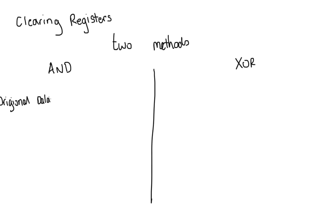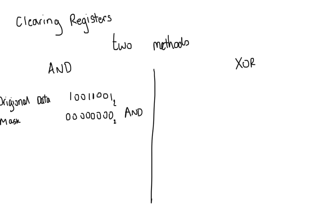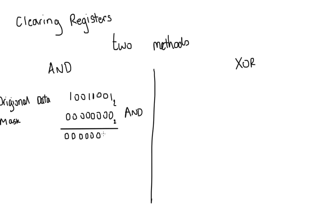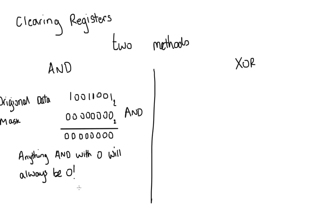For the first method using AND, we have the original data: 1 0 0 1 1 0 0 1. We use the AND logical operator and create a mask of all zeros. If you're familiar with the truth table, all we have to do is AND our original data with all zeros and that will return an empty register of all zeros. That's the first method of clearing registers.